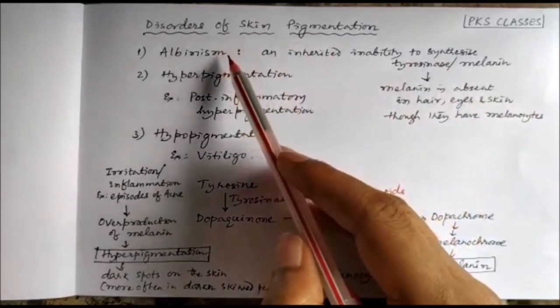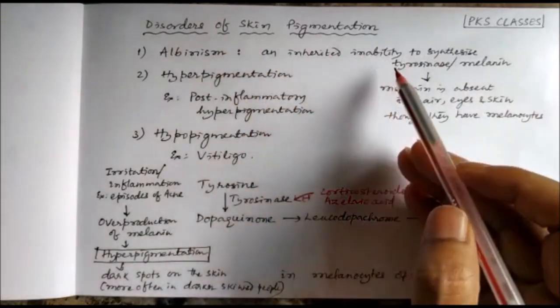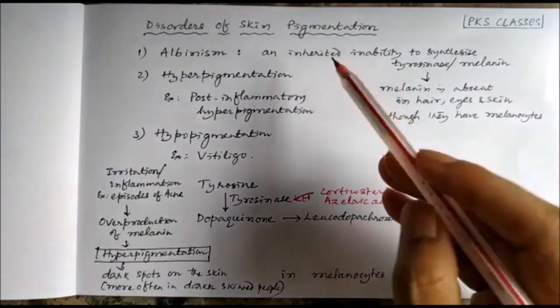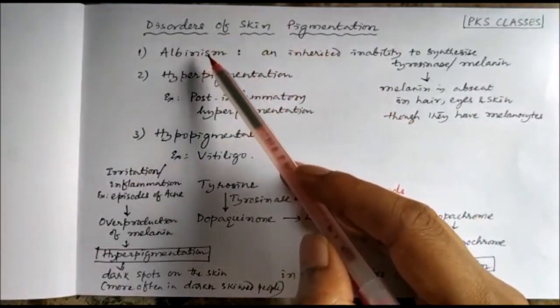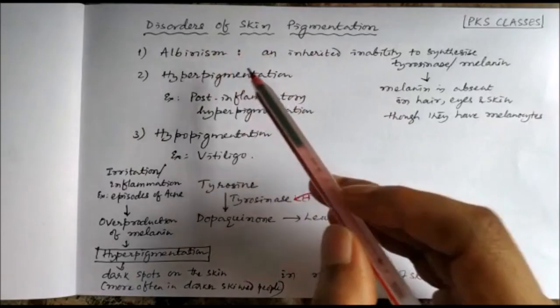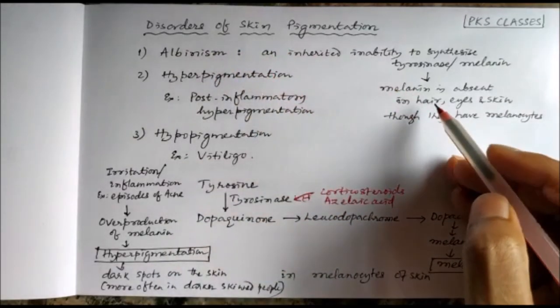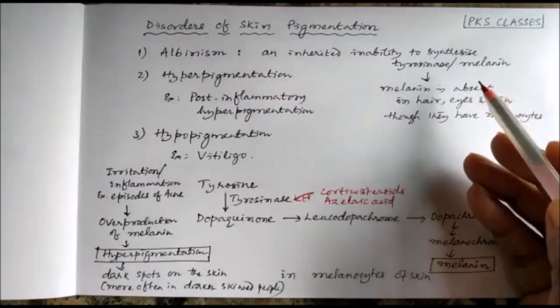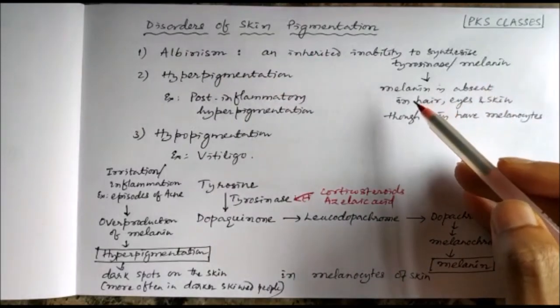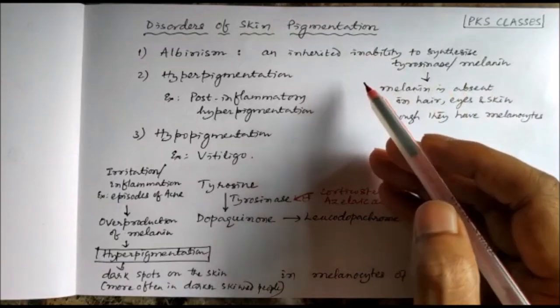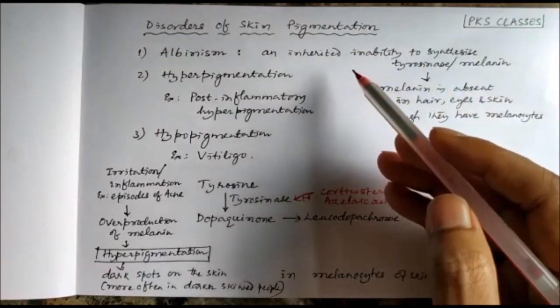Albinism is an inherited inability to synthesize melanin, though the melanocytes are present in albinism patients. Since melanin is absent because they don't have the ability to synthesize it—this is an inherited inability—melanin is absent in hair, eyes, and skin of these people.